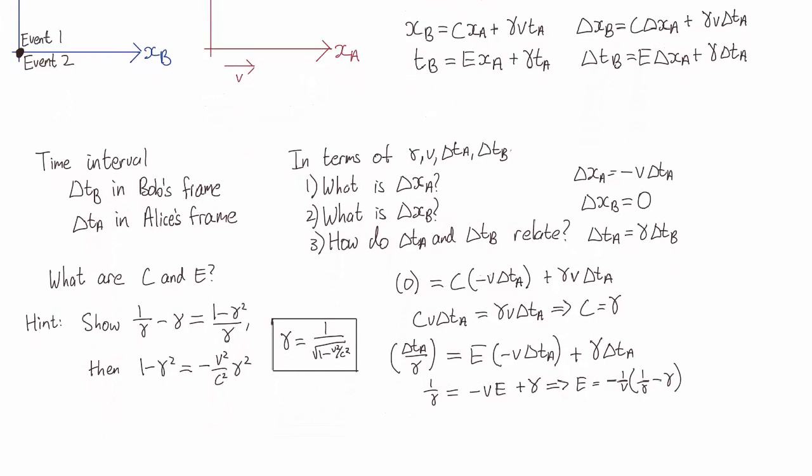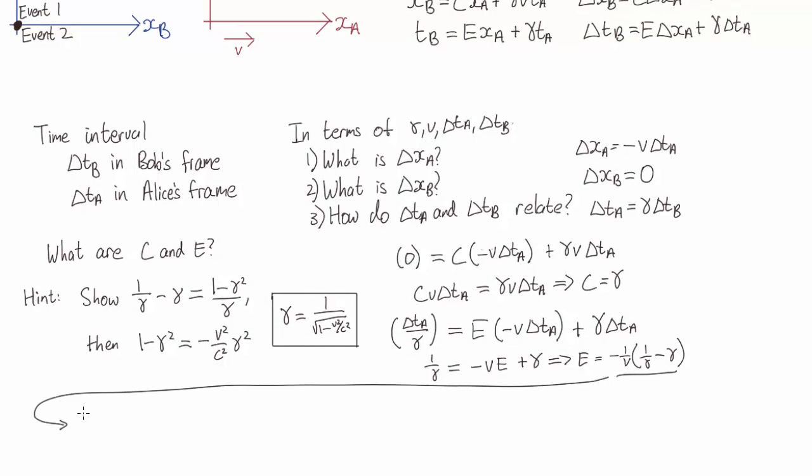And then this is where the hint's coming. So for 1 on gamma minus gamma, we just write the second term as a fraction. For 1 minus gamma squared, we have... We recognize that this is equal to...